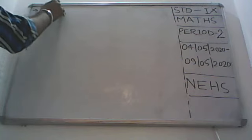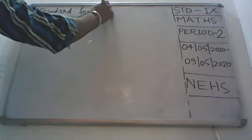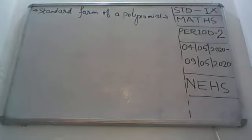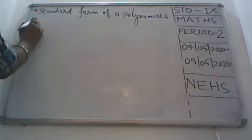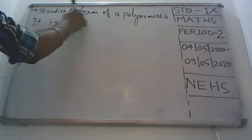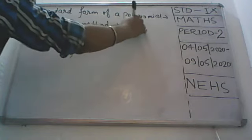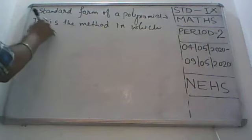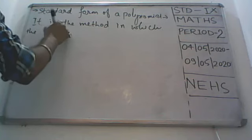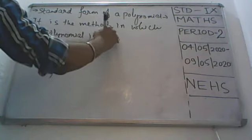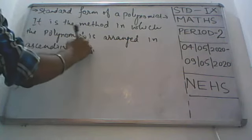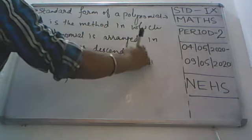The first topic is the standard form of a polynomial. What is the standard form? Everything should be standard for us to use in our calculations. It is the method in which the terms of a polynomial are arranged in ascending or descending order of degree.